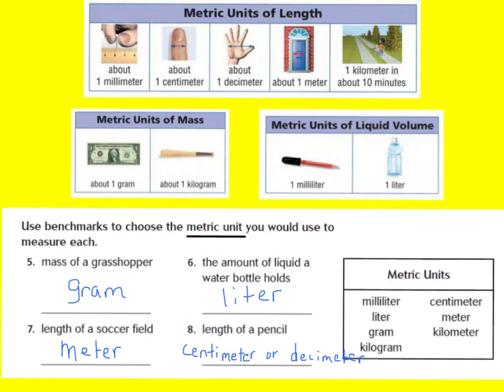For these four, I would have probably said you would measure the mass of a grasshopper with grams. The amount of liquid a water bottle holds would be measured in liters. The length of a soccer field you would measure in meters — there's no way I'd measure a soccer field in millimeters or centimeters or decimeters. And the length of a pencil, you should have said either centimeter or decimeter. I hope you did well on those four. Now let's try some more.